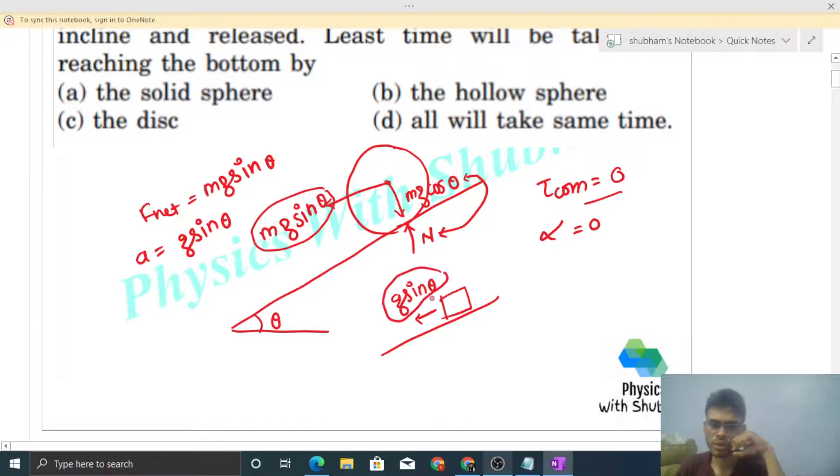We can say that acceleration of all will be same and distance to be traveled by all is also the same, which is the length of this inclined plane. And further, initial velocity of all is zero.